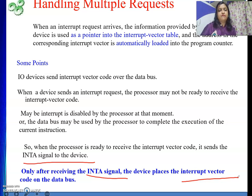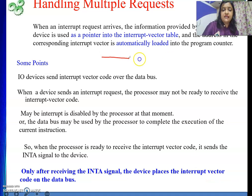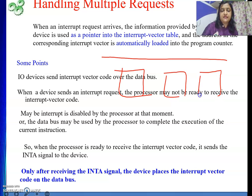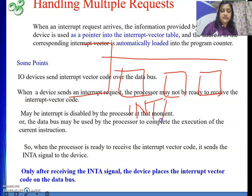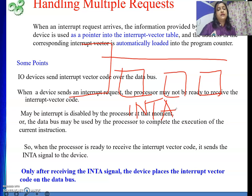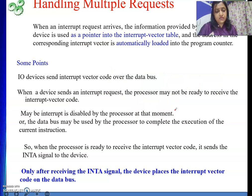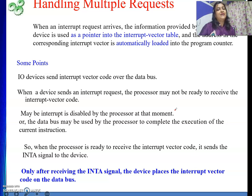This is how the vector interrupt method works. One more point: over a single line, many devices can place requests simultaneously. The processor first decides which device to send the INTA pulse to; whichever device receives the INTA pulse places its code on the data bus, and the processor indexes into the vector table to get the starting address of that device's interrupt service routine. This is a very interesting topic in the IO chapter. Hope you have understood — please like and subscribe to my channel.